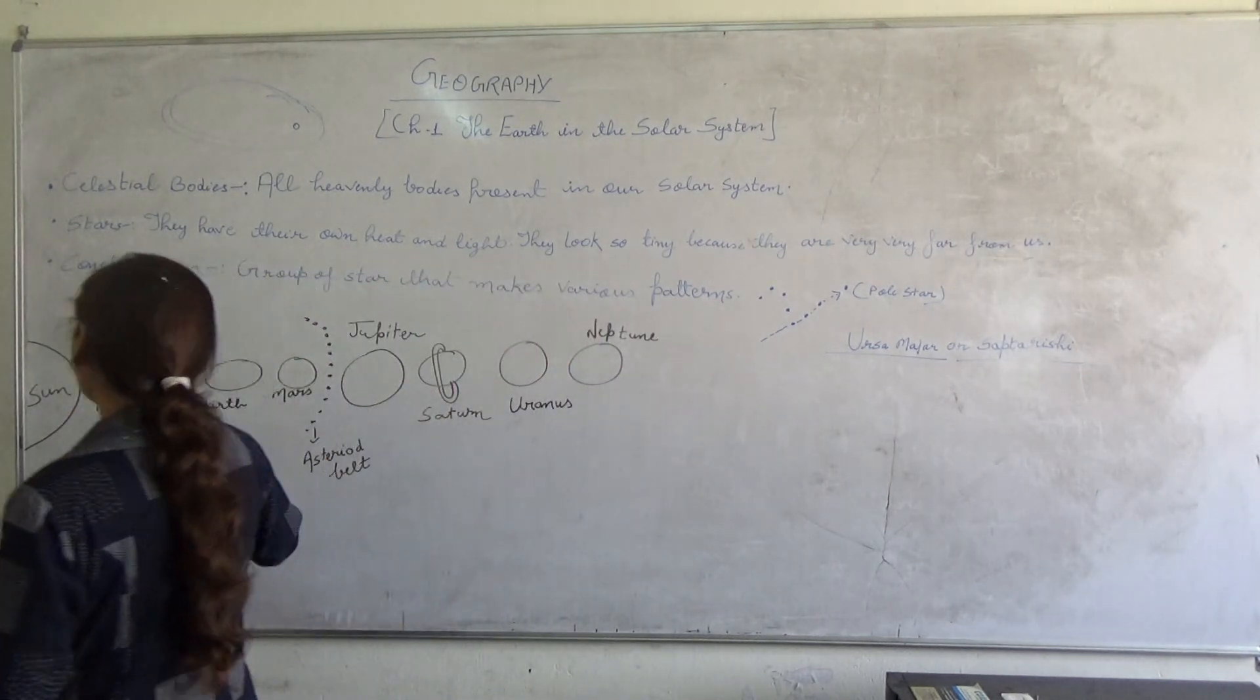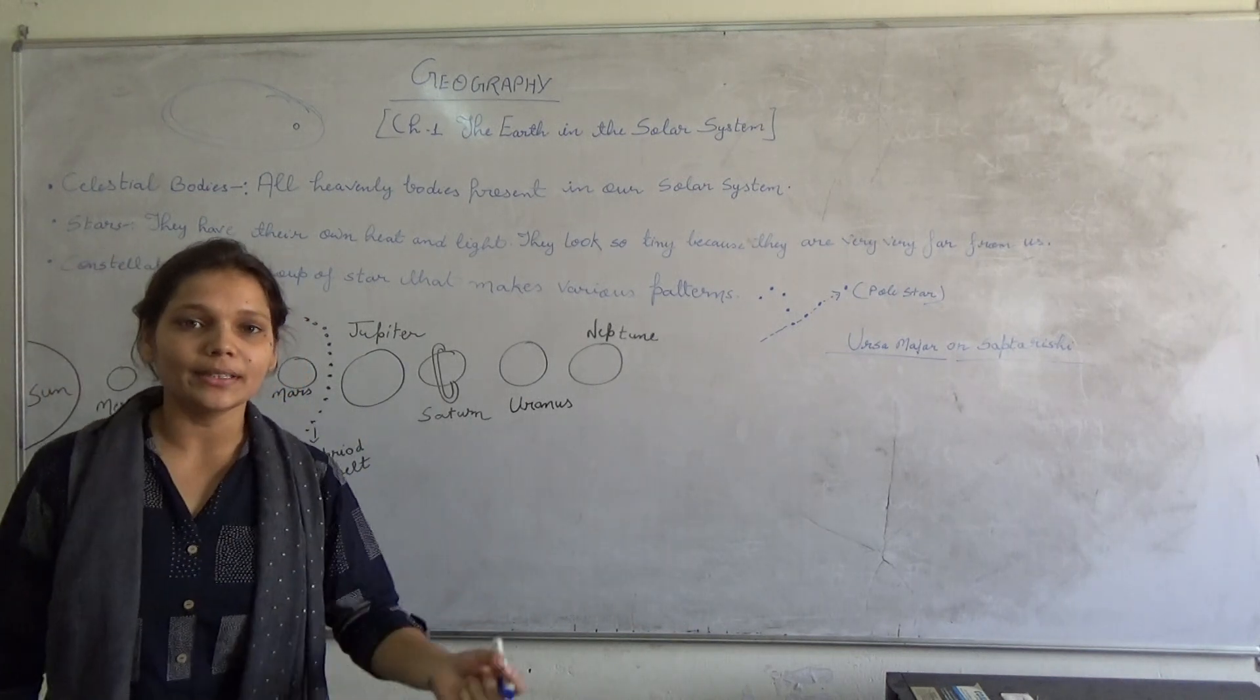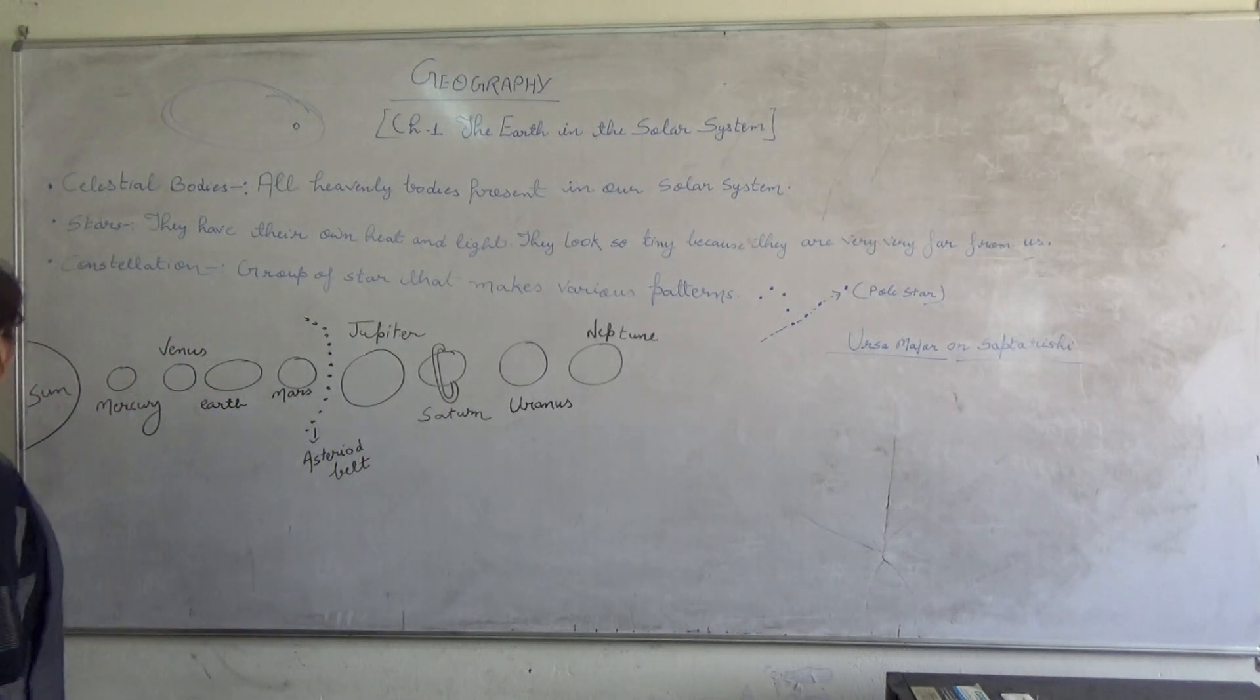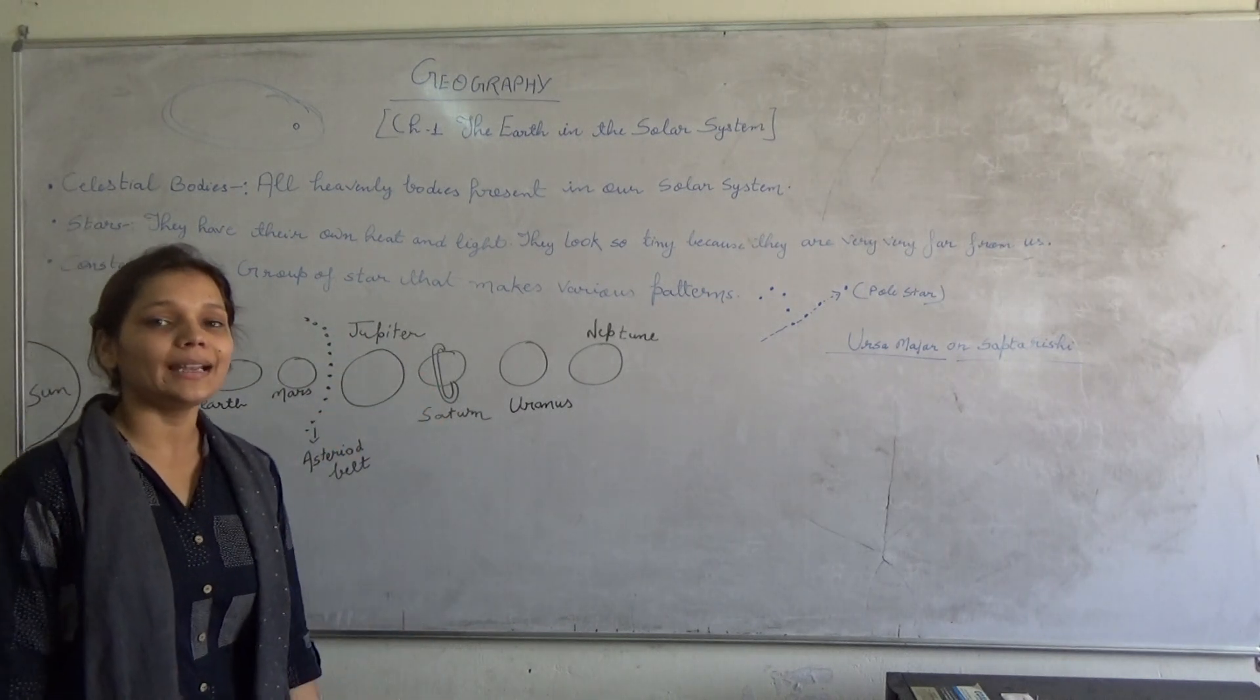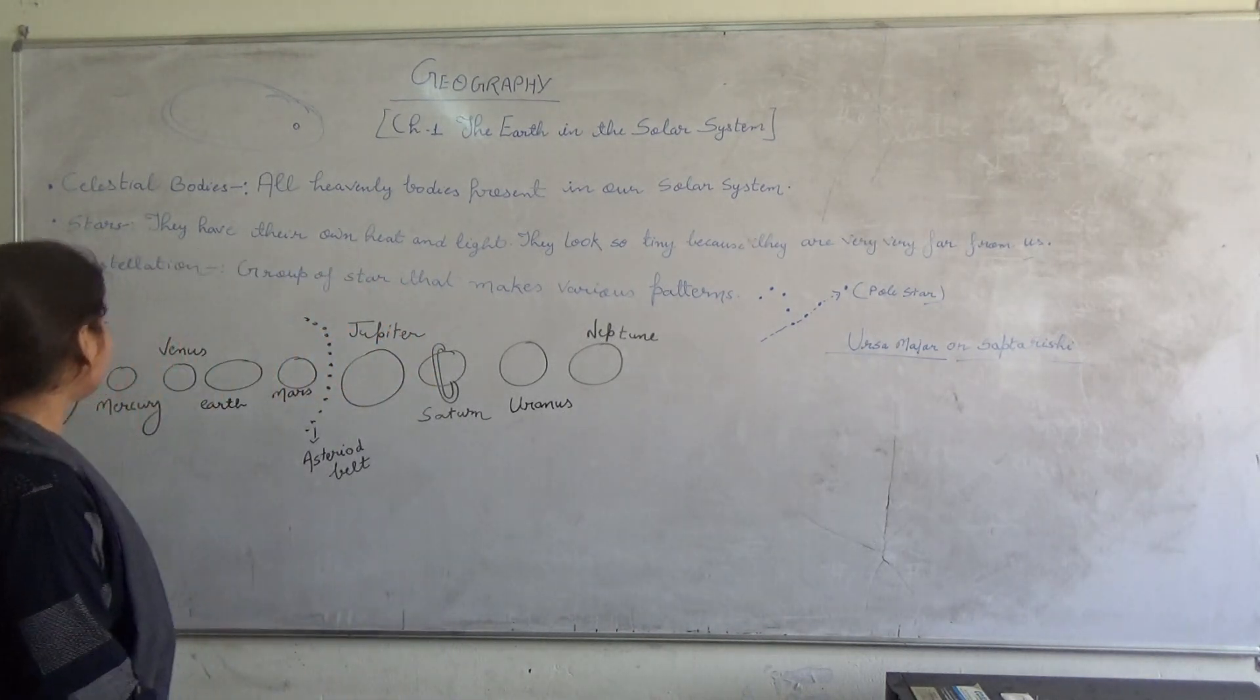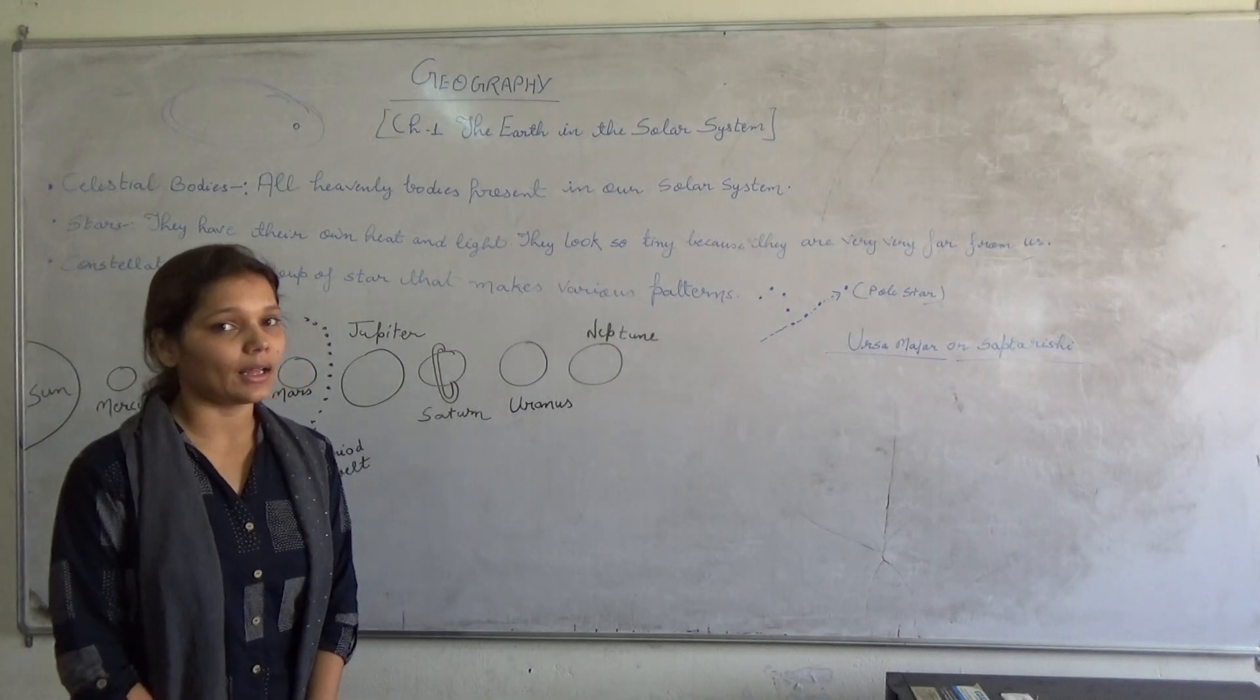Sun along with eight planets and some asteroids, some satellites form the solar system. First we will talk about sun. Sun is the center of the solar system and it is a huge ball made up of extremely hot gases. And it is very far. It is 150 million kilometers away from us.